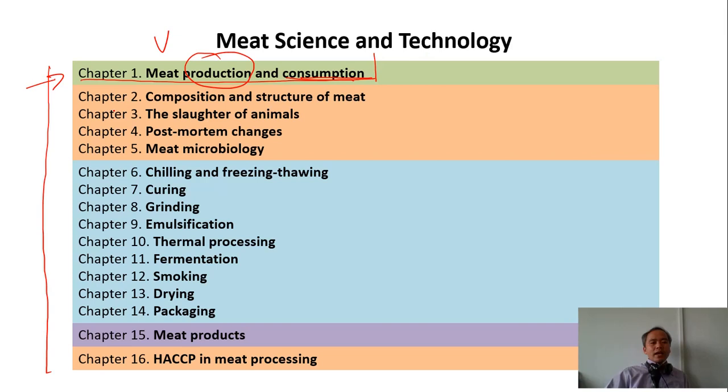Then we have Chapter 2 to Chapter 5, we can call this meat science. In Chapter 2, we discuss the composition and the structure of meat. Composition means what components are there in meat and what percentage they occupy. Chapter 3, we discuss the slaughter of animals.